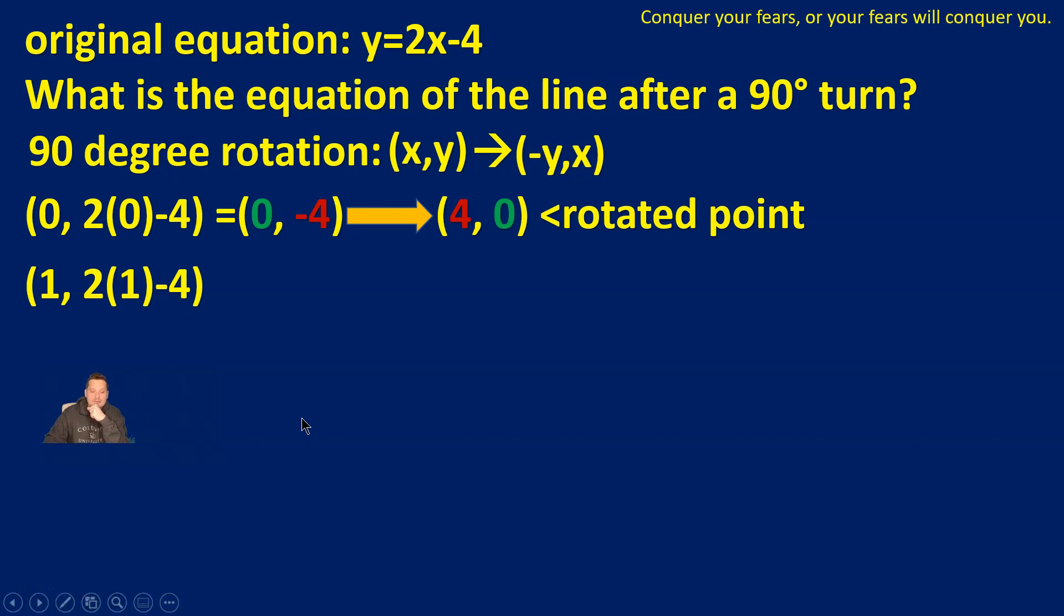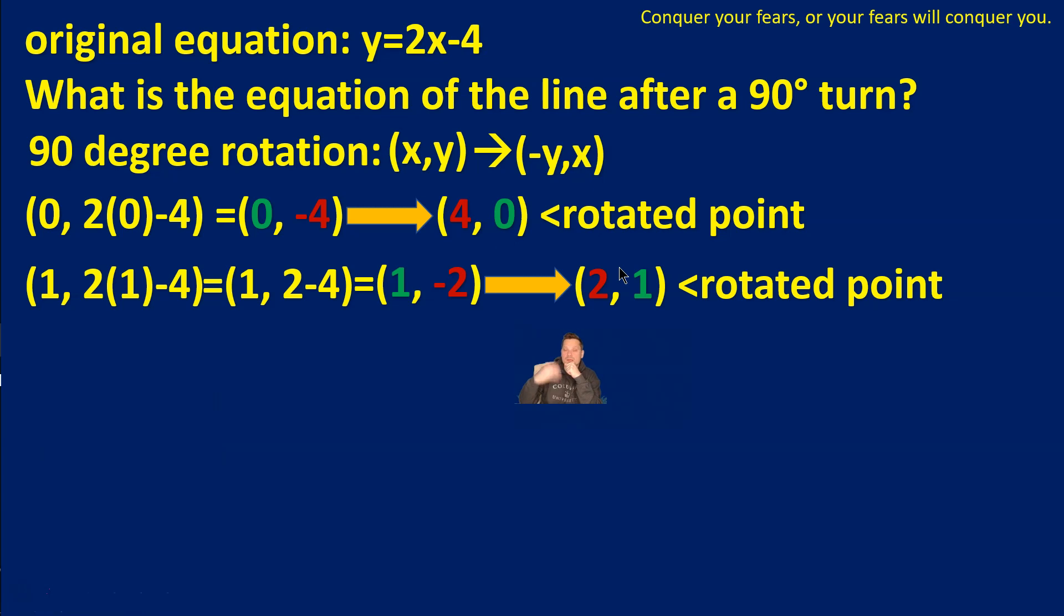That's going to look like the following: (1, 2 minus 4), and then lastly that's going to become (1, -2). So that's a second point on the original line. What I can do with this now is also basically rotate it 90 degrees. So I carry that out. That's going to look like (2, 1). That's my second rotated point.